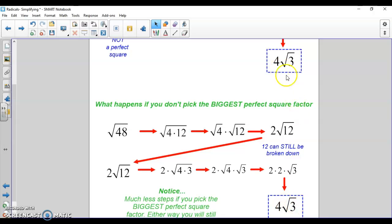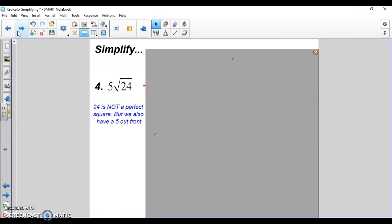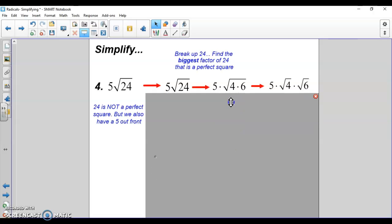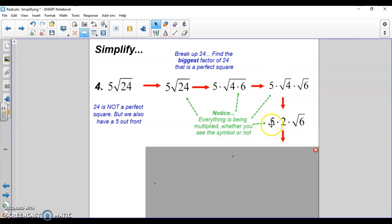Last example: 5 radical 24. 24 is not a perfect square, and this one also has a factor in front. We break up 24: it's 4 and 6. 5 times the square root of 4 times square root of 6. Square root of 4 is 2, so it's 5 times 2 outside the radical. 10 radical 6 is your answer. Everything is being multiplied - you just multiply what comes out.